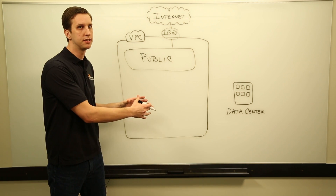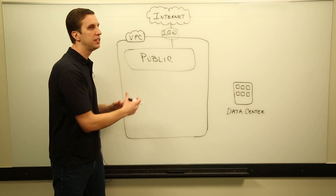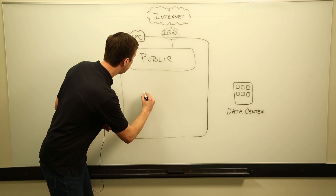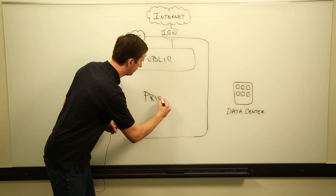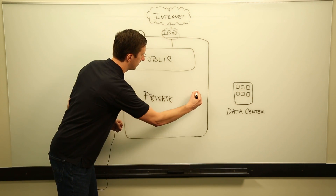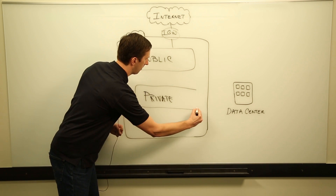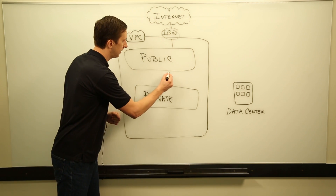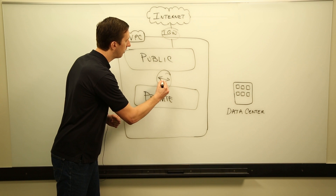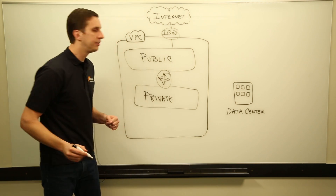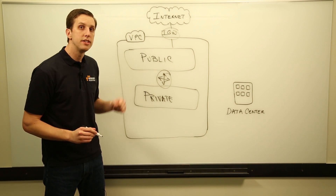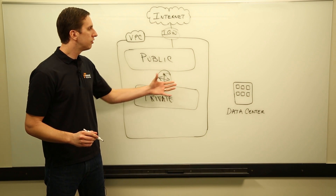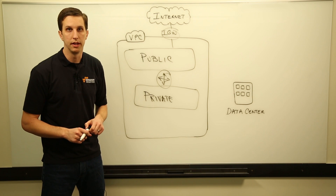Perhaps there's a need for a private subnet. Some resources need to be isolated in their own private subnets. We can certainly do this — we can provision a private subnet, and access between the public and private subnet is enabled through the internal routing of your VPC. You can use network access control lists and security groups to really control the flow of traffic between your subnets.